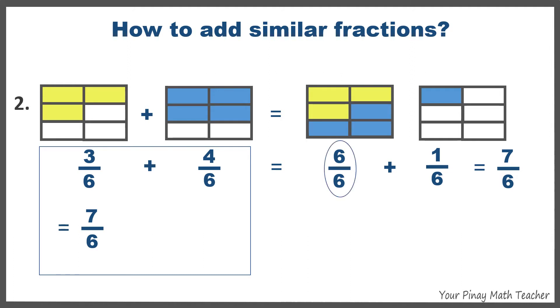Converting 6 over 6 to one whole, we have 1 plus 1 sixths, giving us a sum of 1 and 1 sixths. Since 1 sixths is already a proper fraction and it's reduced to lowest term, then 1 and 1 sixths is the final answer.